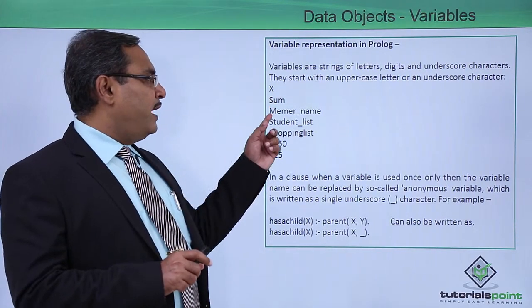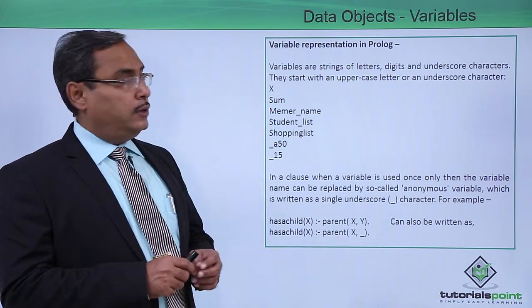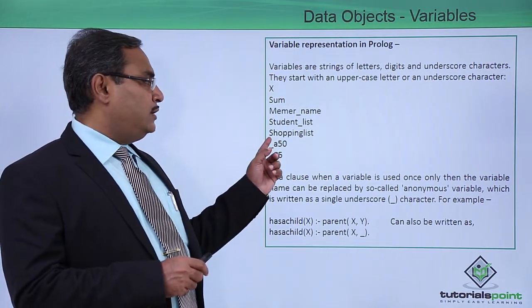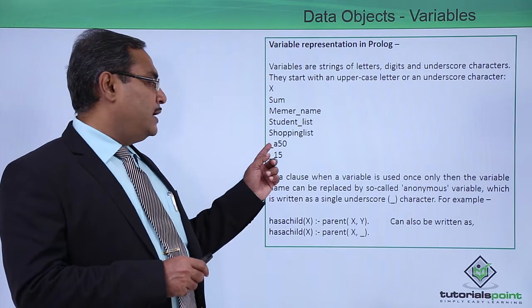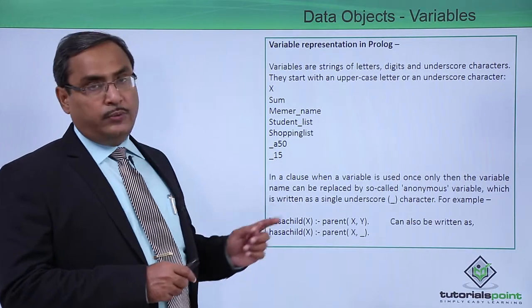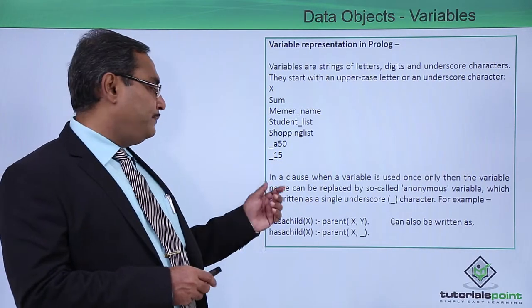These are the valid variable names in Prolog. These variables are starting with some capital letters and some are starting with an underscore character.